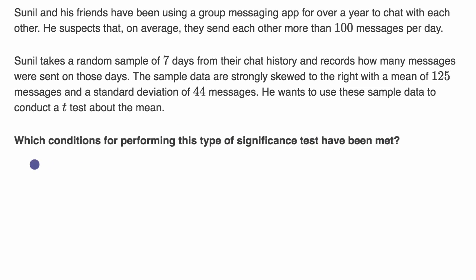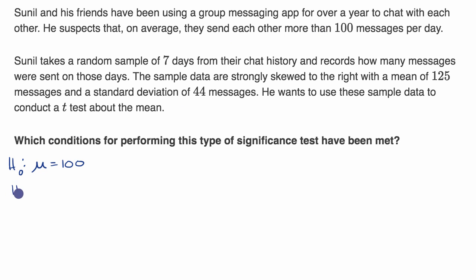So let's think about what's going on here. Sunil might have a null hypothesis — maybe he read a magazine article saying the average teenager sends 100 text messages per day. So maybe the null hypothesis is that the mean amount of messages per day that he and his friends send, signified by mu, is 100 — that they're no different than all other teenagers. And his alternative hypothesis would be what he suspects: that they send more than 100 text messages per day.